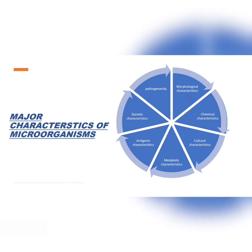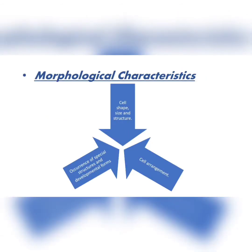The major characteristics used for classification are: macromorphological, chemical, cultural, metabolic, antigenic, genetic, and pathogenesis. Number one is morphological characteristics. Determination of morphological features usually requires examination of individual cells of a pure culture. Microscopic organisms are very small, and their size is usually expressed in micrometers. Routine examination of microbial cells requires the use of a high power microscope.